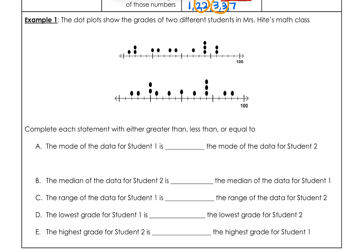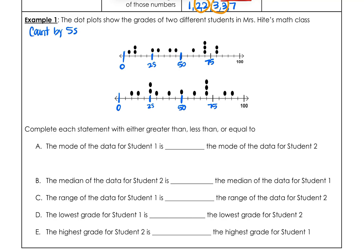Before writing the numbers, we need to figure out what the dot plot is counting by. I'm assuming this starts at zero, and if the middle mark is 50 and the end is 100, then we have 25 and 75 as well. Counting the marks — 5, 10, 15, 20, 25 — they're counting by fives. So I'll make a note: counting by fives.